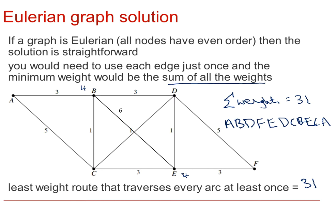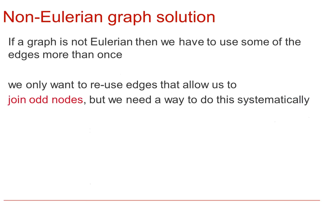Note that this is not the only possible route, there will be several. If a graph is not Eulerian, then we have to use some of the edges more than once. We only want to reuse edges that allow us to join odd nodes, but we need a way to do this systematically.